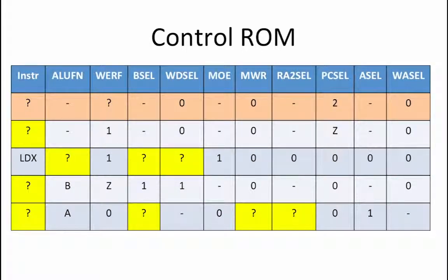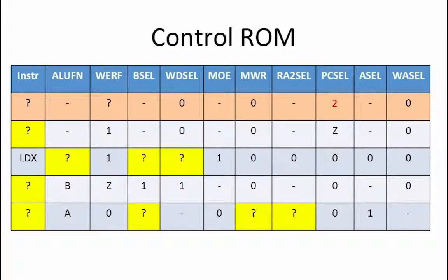Let's begin by looking at the top row of this table. The value that stands out as a bit different in this row is the PC cell value, which is equal to 2. For most instructions, PC cell equals 0. For branch instructions, it equals 1. And for jump instructions, it equals 2. This means that the instruction described in this row must be a jump instruction.